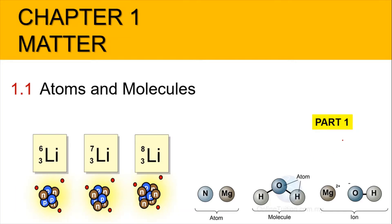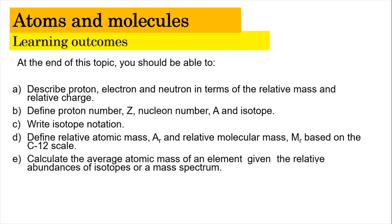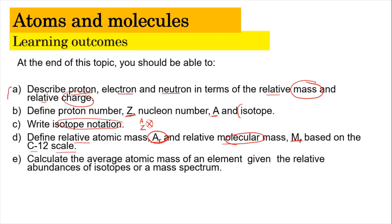In subtopic 1.1, we're going to look into part 1 first in this video. You're going to describe the properties of protons, electrons, and neutrons in terms of relative mass as well as relative charge. Next, we're also going to look into the proton number Z, as well as the nuclear number, and the writing of isotope notation described as A, Z, and X, where X refers to a chemical symbol. For learning outcome D, we're going to define the relative atomic mass AR and relative molecular mass MR based on the carbon-12 scale. We'll cover learning outcomes A to D in part 1, and learning outcome E will be covered in part 2 in the next video.